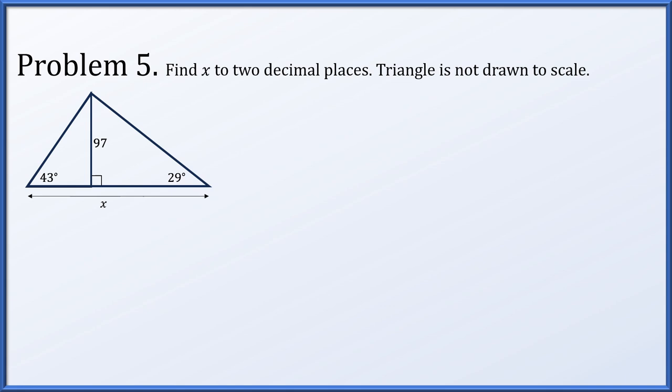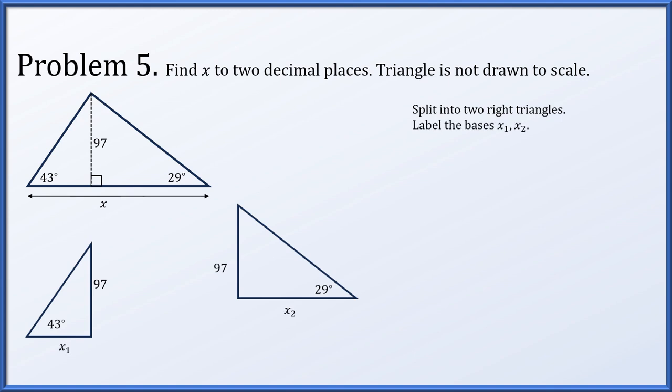In problem 5, we're asked to find x to two decimal places. The triangle is not drawn to scale. Incidentally, you should never assume that something is drawn to scale unless you are told that. So let's split this into two right triangles, with that height of 97 going into both triangles. Let's label the bases of those two triangles x1 and x2 and note that in our original triangle, x1 plus x2 is the missing x. In the left triangle, we have x1, which we're trying to solve for, and the height 97. The tangent of 43 degrees is 97 over x1, so x1 is 97 divided by the tangent of 43 degrees.